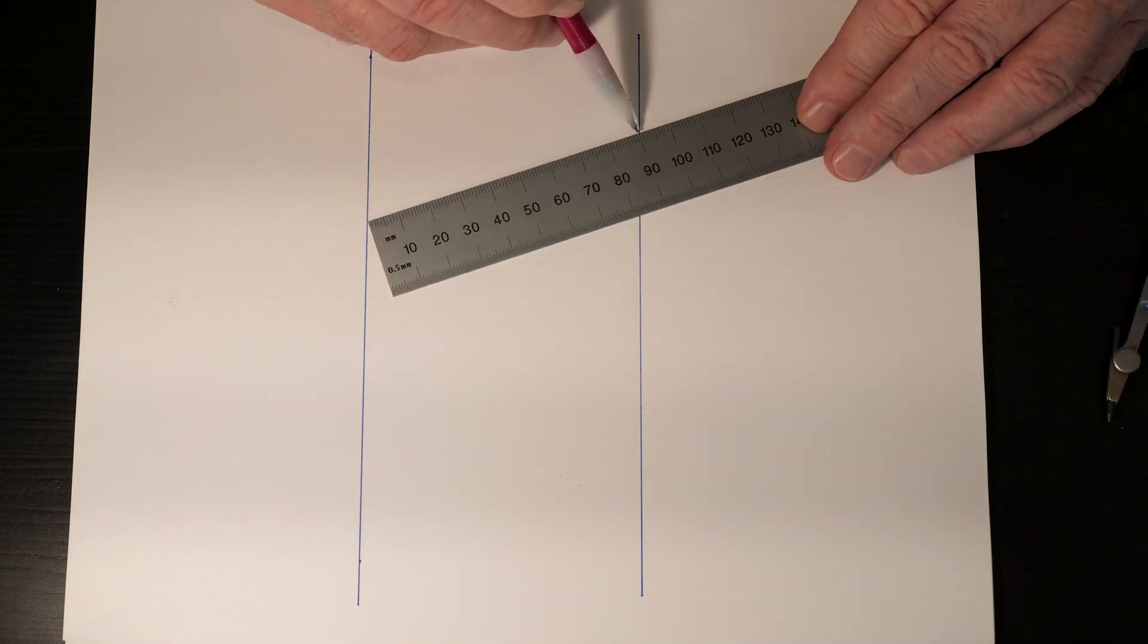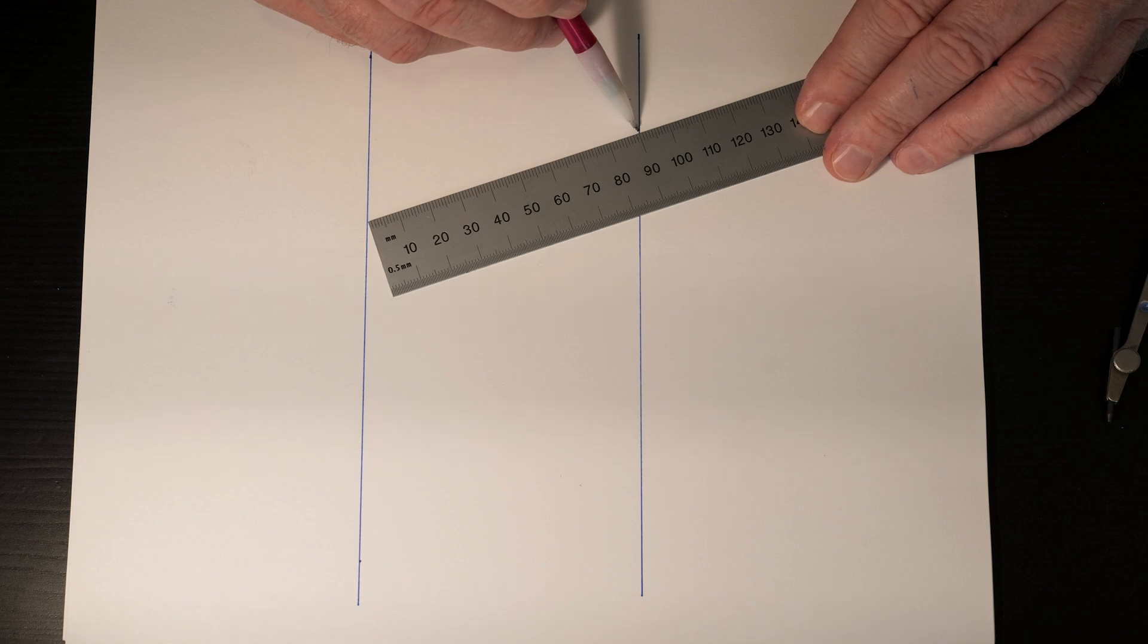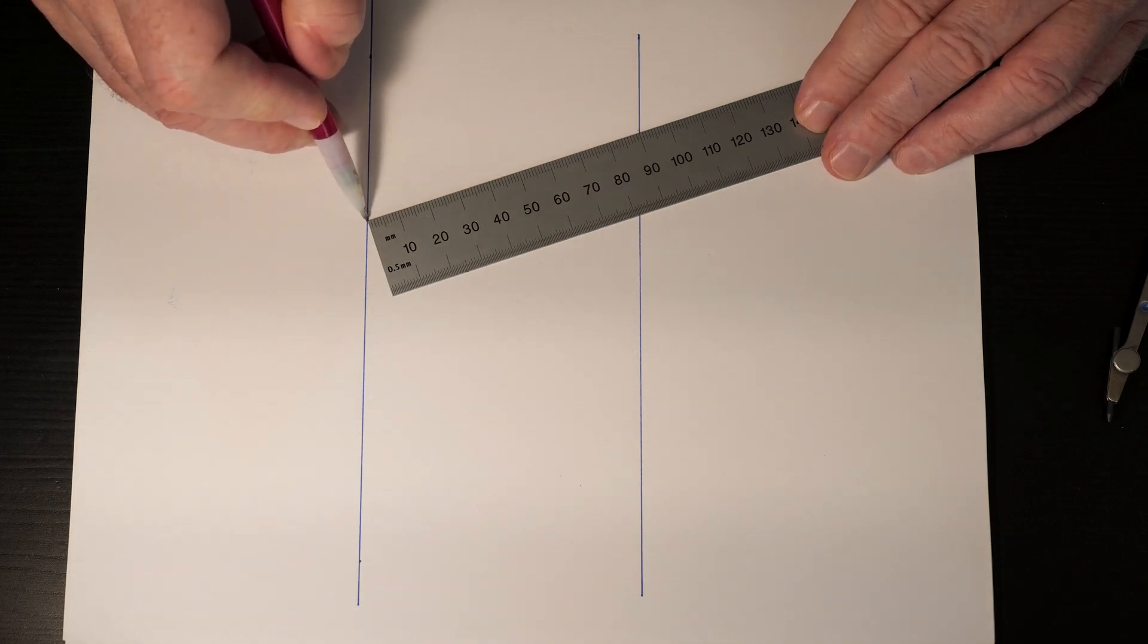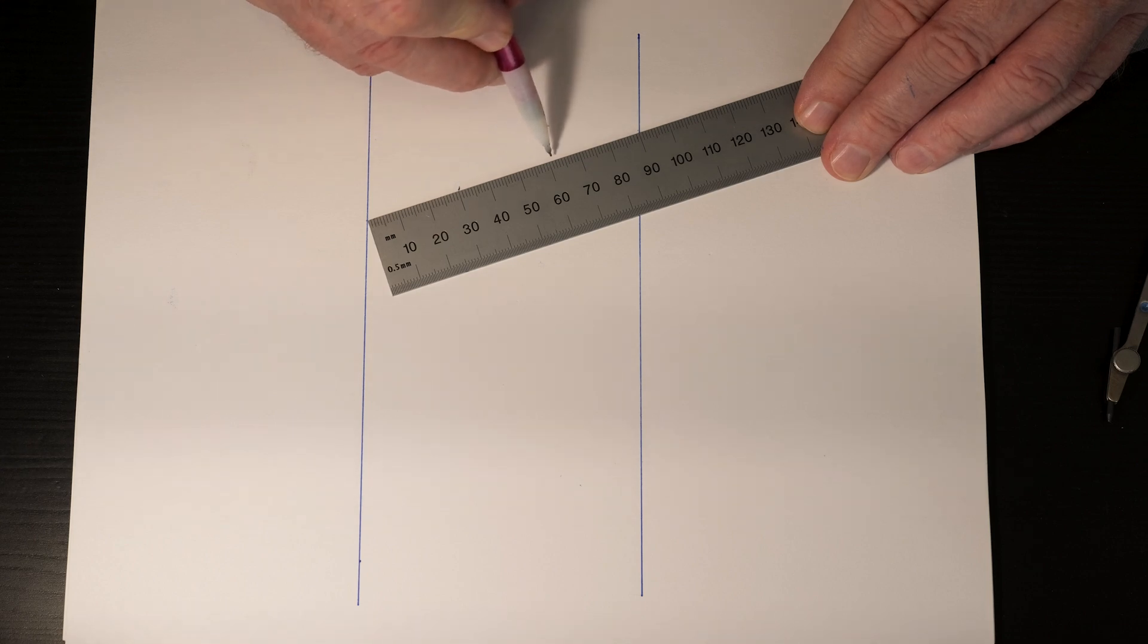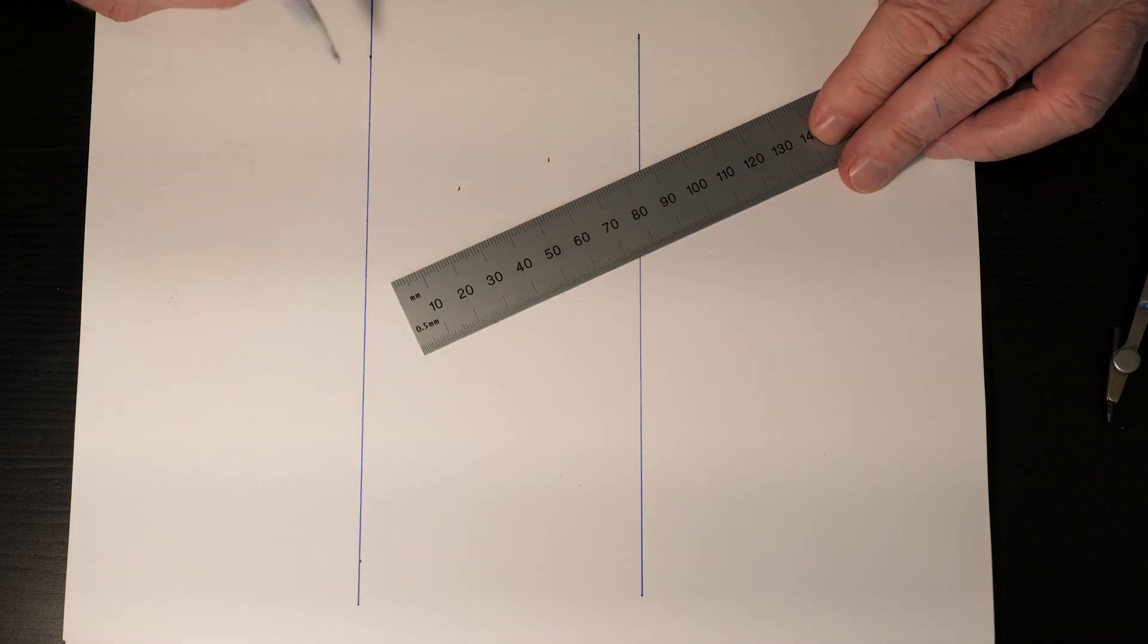I'm going to line the 90 up on one edge of the workpiece and the zero point on the other end and we're going to come in here at 30 and 60 and make a mark.